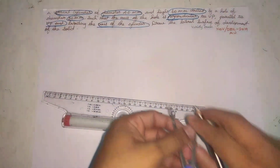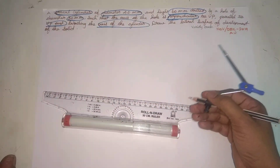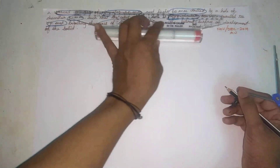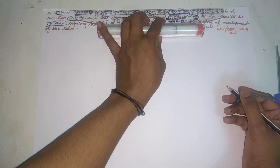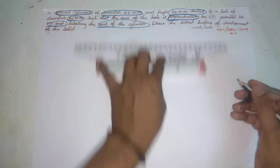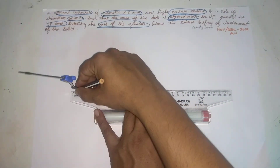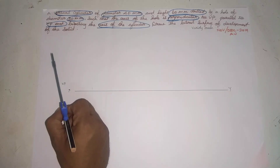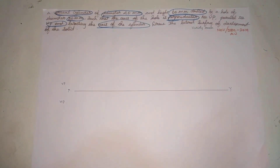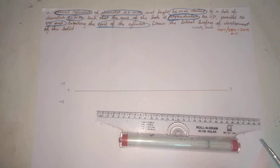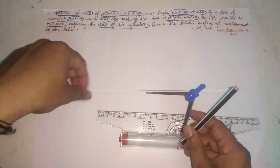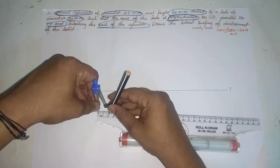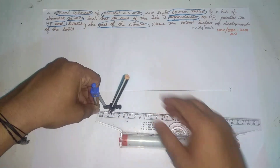I will explain this to you. If you look at this channel, you will find a lot of problems explained. Let's look at the XY line. This is Y, this is VP, this is HB. So this is the vertical cylinder of diameter 40 mm. Diameter 40 mm means radius 20 mm, so the width is 20 mm.